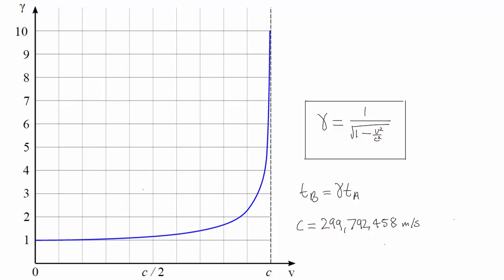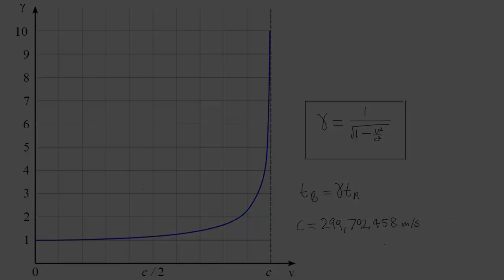you need to be going very, very quickly, and it's only as v gets really close to c that gamma starts to grow large.